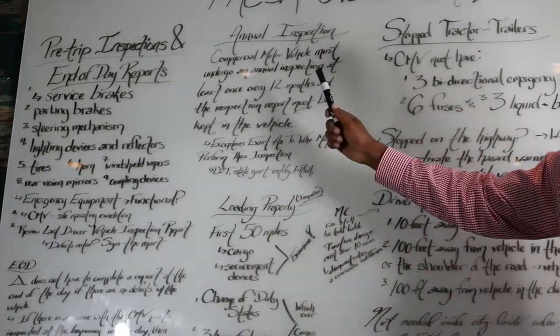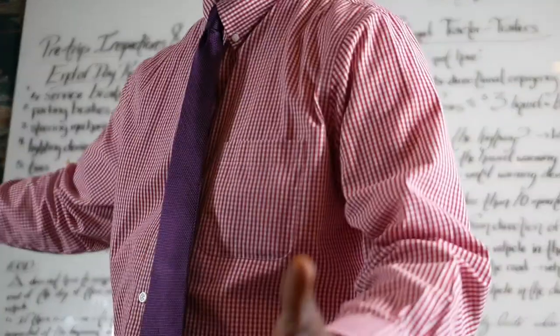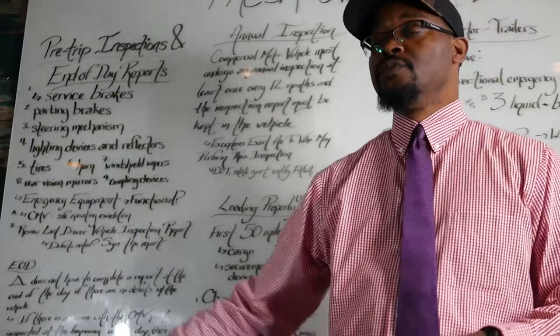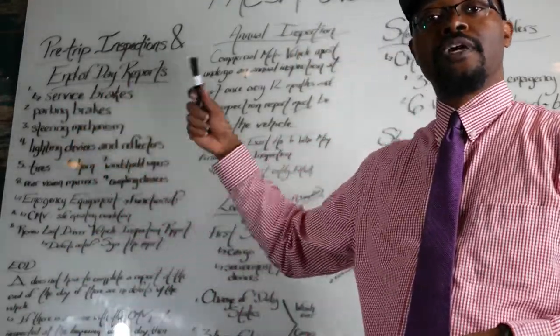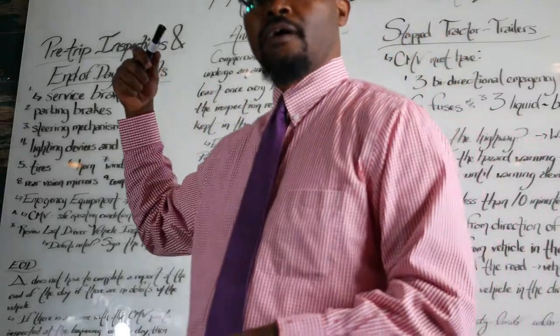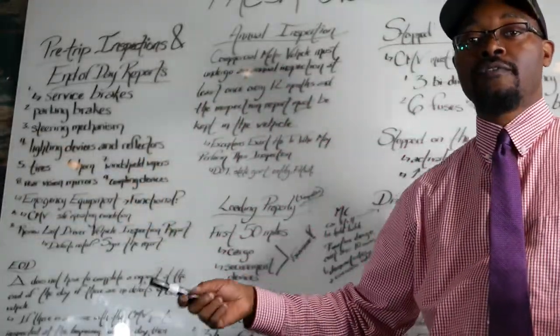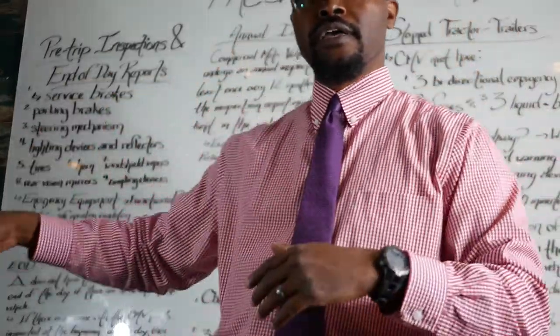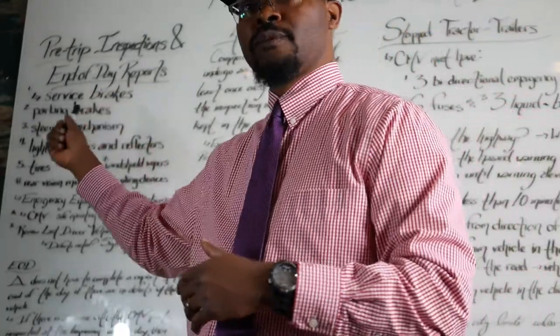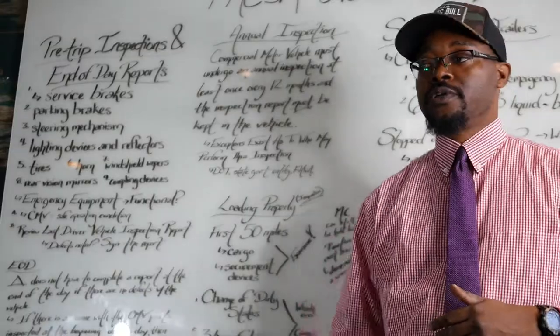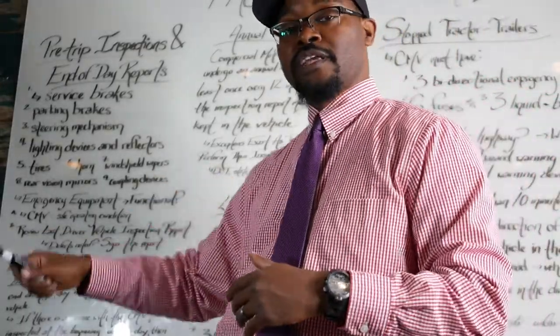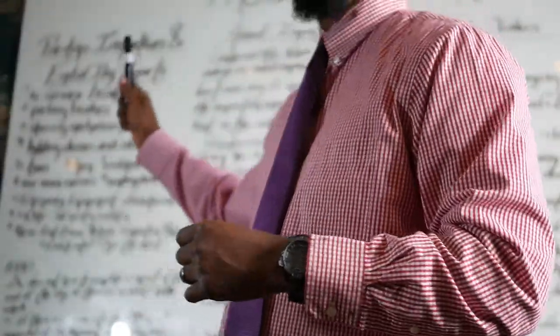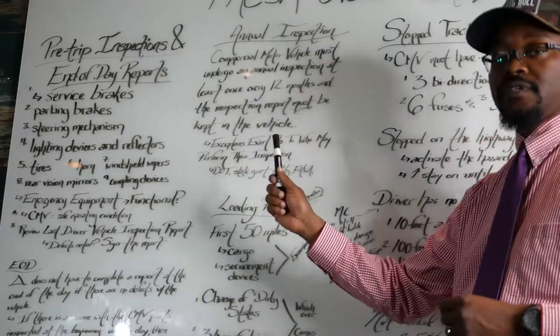Moving on to the annual inspection. The annual inspection of a commercial motor vehicle - you have to have a 12 month annual inspection. Every 12 months you have to have that commercial motor vehicle inspected. It can be inspected by a variety of parties as long as their standards meet the minimum standards for inspection. You can have it inspected by a federal highway association inspector, by DOT, or state government governing agency. A variety of people can inspect it, but they have to meet those minimum FMCSR standards.